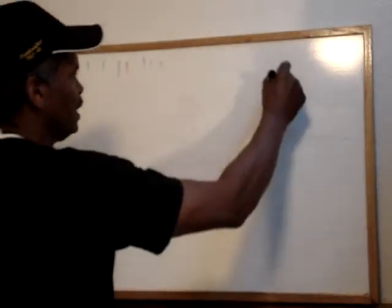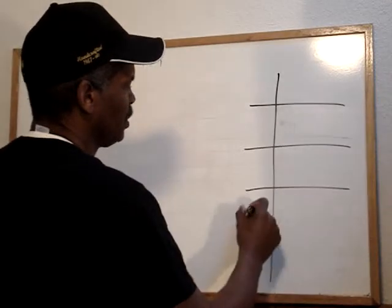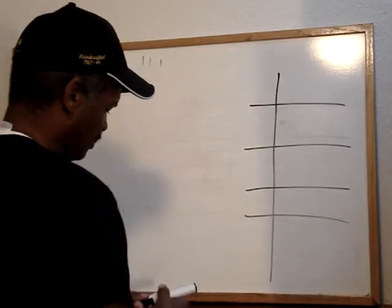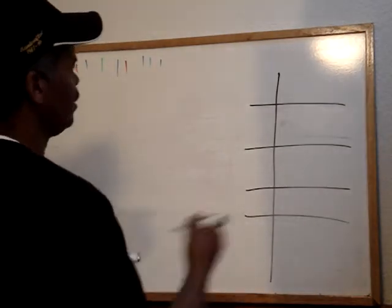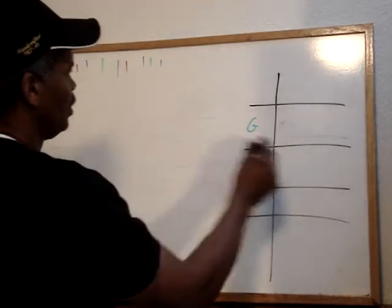Now, what we want to do is we want to see how many times each one of those events occur. So how many times do we have a green? In this case, 1, 2.